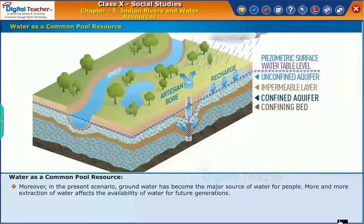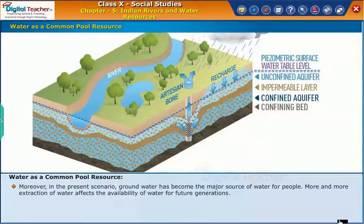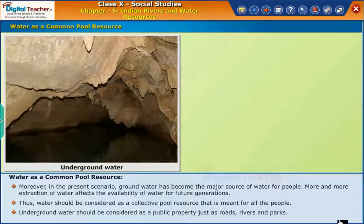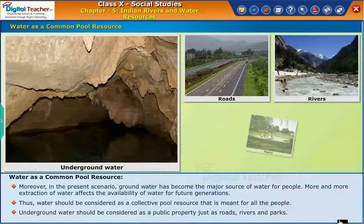Moreover, in the present scenario, groundwater has become the major source of water for people. More and more extraction of water affects the availability of water for future generations. Thus, water should be considered as a collective pool resource that is meant for all people. Underground water should be considered as public property, just as roads, rivers, and parks.